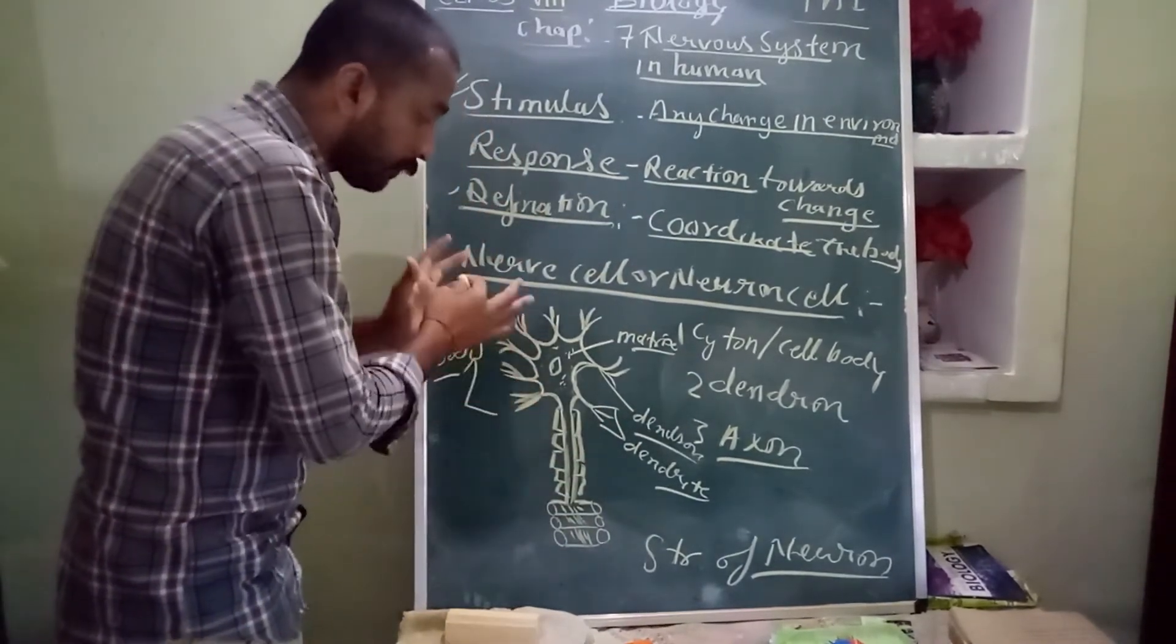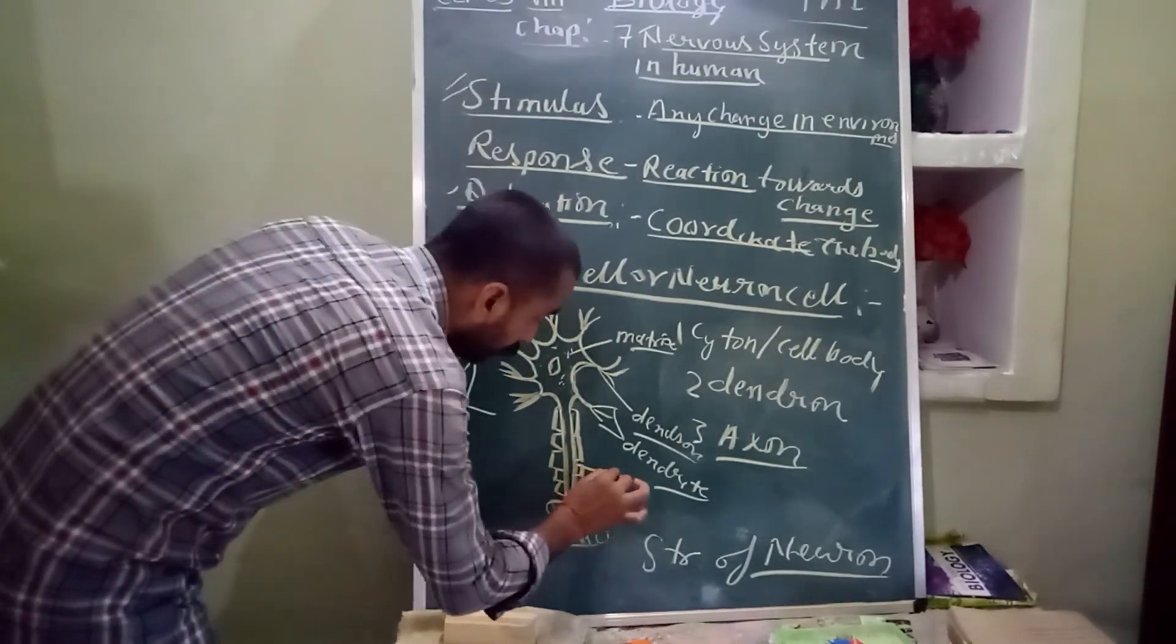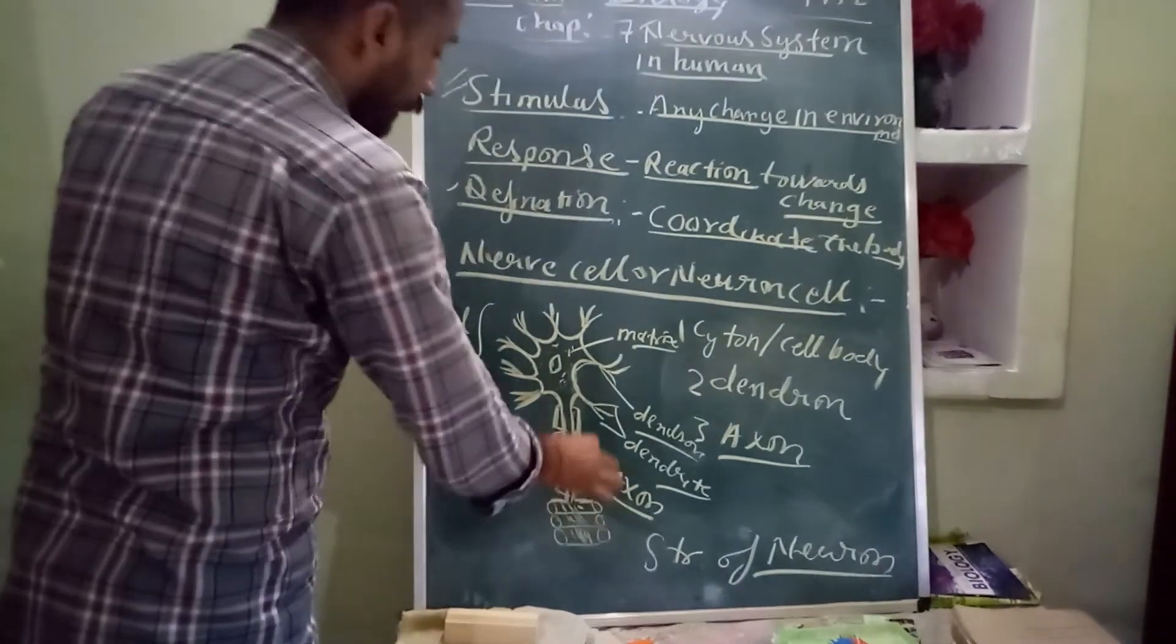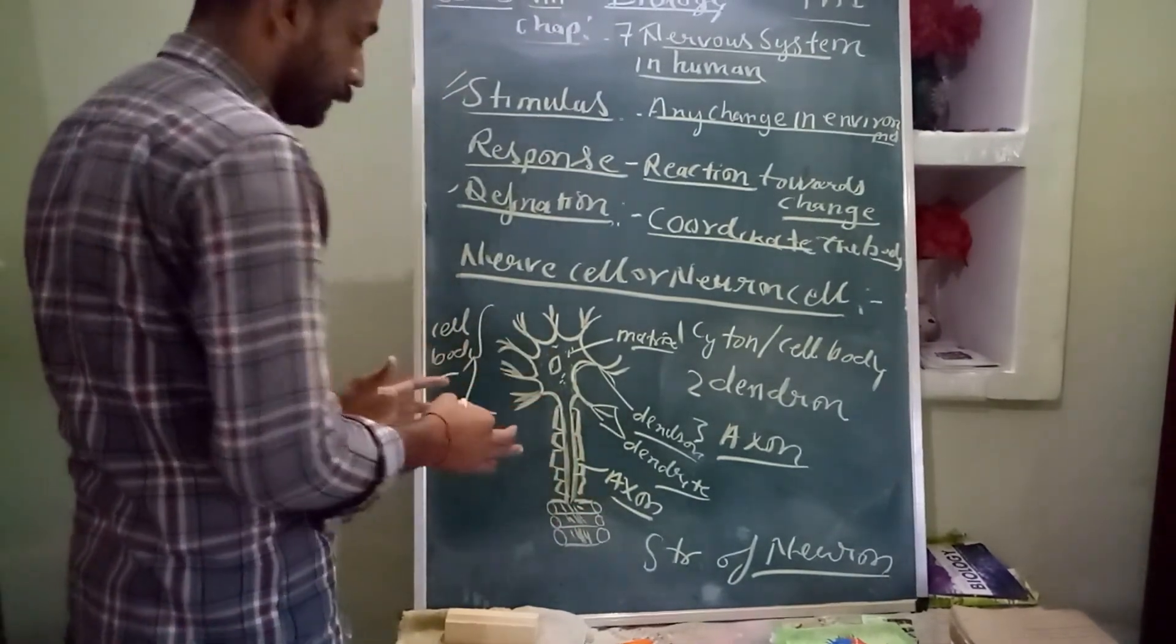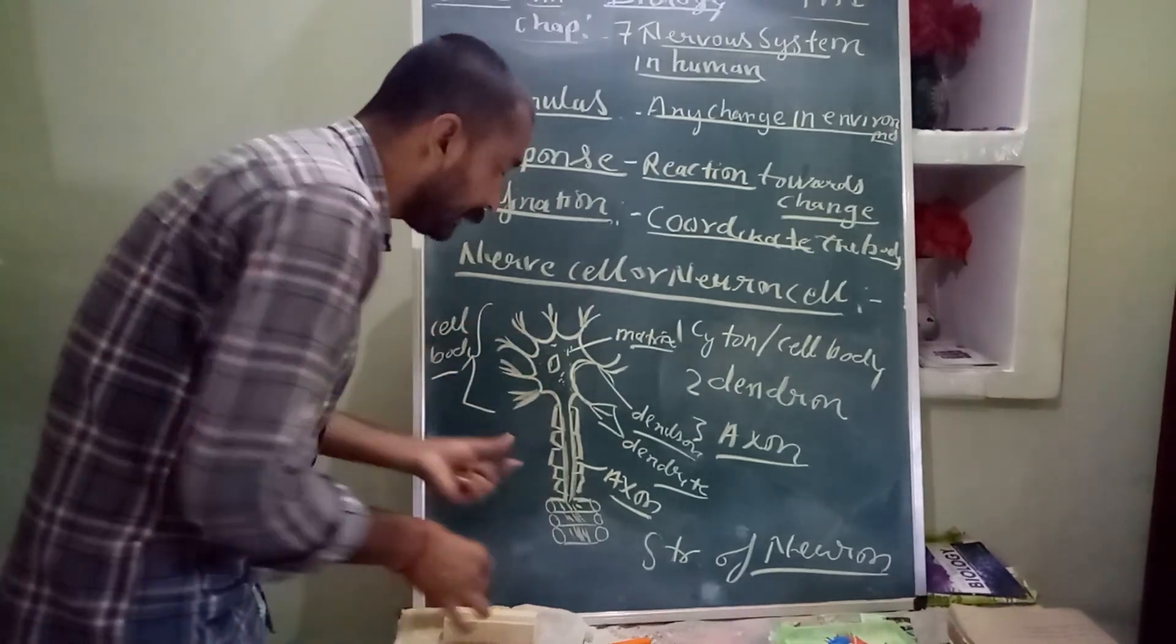Then a long fiber extending from the cell body, this is called axon. An axon is covered with a sheath, covered with a sheath but not continuous; the sheath is in between.